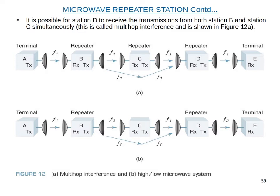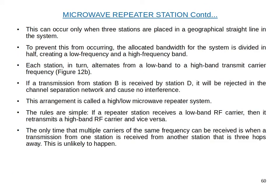This arrangement is called a high-low microwave repeater system. The rule is: if a repeater station receives a low band RF carrier, then it retransmits a high band RF carrier, and vice versa. The only time that multiple carriers of the same frequency can be received is when a transmission from one station is received by another station that is three hops away, and this is unlikely to happen.